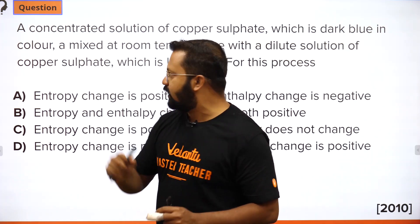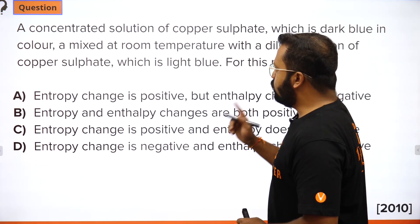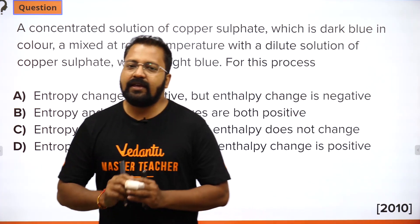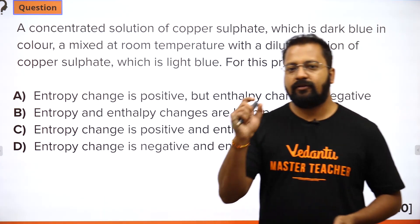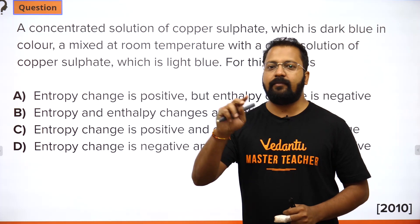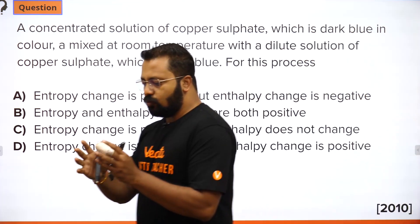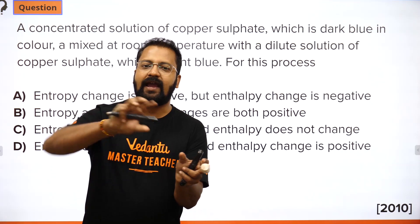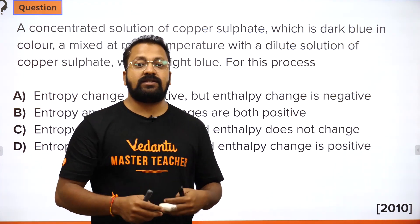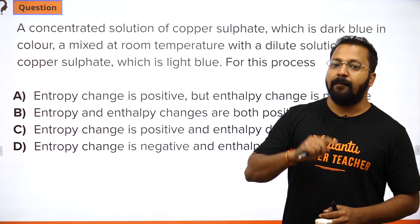The first question: a concentrated solution of copper sulfate, which is dark blue in color, is mixed at room temperature with a dilute solution of copper sulfate, which is light blue in color. Copper sulfate aqueous is blue — if highly concentrated it is dark blue, and if dilute it is a lighter shade of blue. What is happening when we mix a concentrated solution with a dilute solution? Uniform mixing takes place, and when uniform mixing takes place, entropy has to increase. Entropy means the randomness of the system, and randomness will always increase when you mix things.